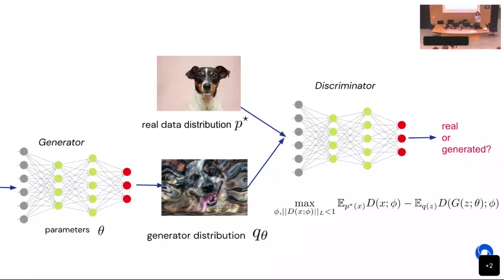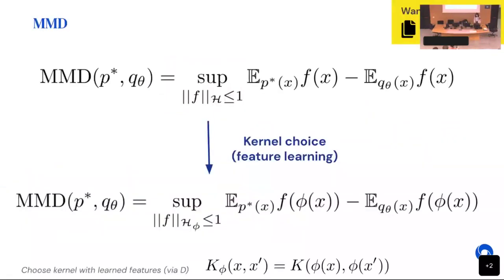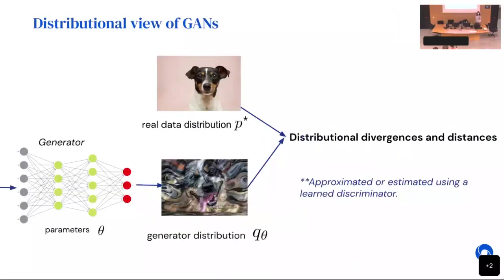Q: Does the depicted loss solve the mode collapse issue affecting GAN architectures? A: Mode collapse — you probably mean mode collapse rather than posterior collapse, which is more a VAE issue. The main message of this talk is that the best way to address mode collapse is through optimization. A lot of these distributional divergences and distances are great, but you don't easily get around the fact that this is an adversarial game with challenges in optimizing adversarial games.